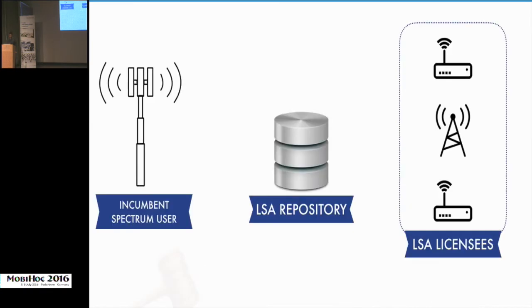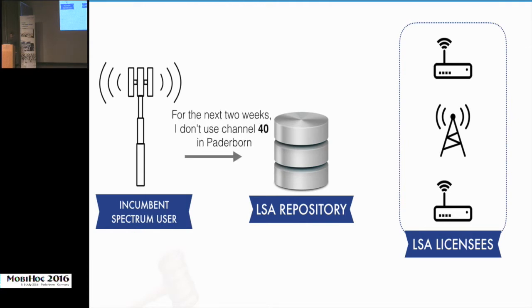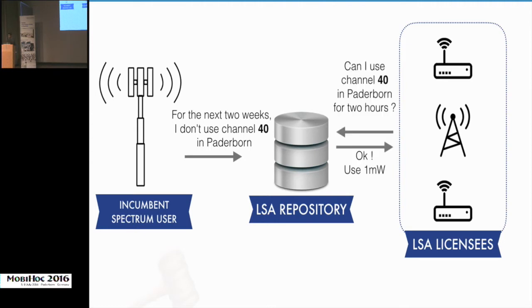There are three entities in the LSA model. The incumbent spectrum user is the entity who has licensed spectrum that is underutilized. The LSA repository maintains details of what spectrum is used, where, and how. The LSA licensees are operators interested in using this underutilized spectrum for a shorter period in a particular location. A typical transaction goes like this: the incumbent tells the LSA repository it doesn't need a particular channel for the next couple of weeks, and an LSA licensee can request to use that channel for a few hours, subject to certain conditions.